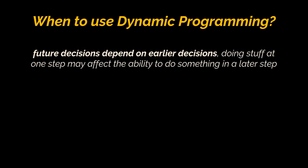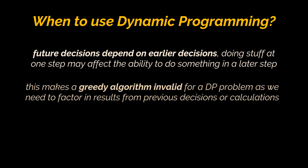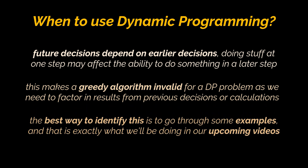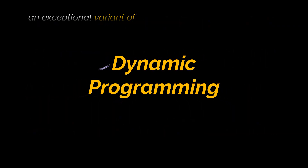The second characteristic common in DP problems is that future decisions depend on earlier decisions. Deciding to do something at one step may affect the ability to do something in a later step. This is what makes a greedy algorithm invalid for a DP problem, as we need to factor in results from previous decisions or calculations. The best way to identify this characteristic is to go through examples, which is exactly what we'll do in the upcoming videos.